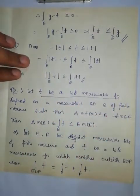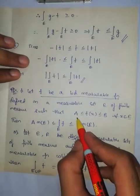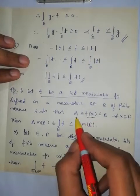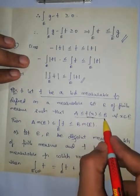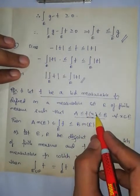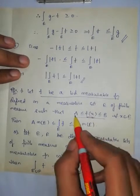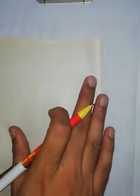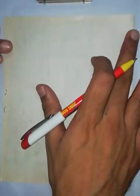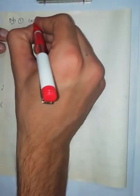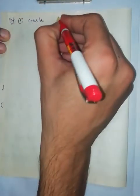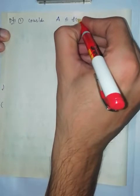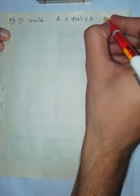For the first theorem: let f be a bounded measurable function defined on a measurable set E such that f is bounded between a and b. We need to show the Lebesgue integral of f lies between a·m(E) and b·m(E). Proof: Consider a ≤ f(x) ≤ b for all x in E.